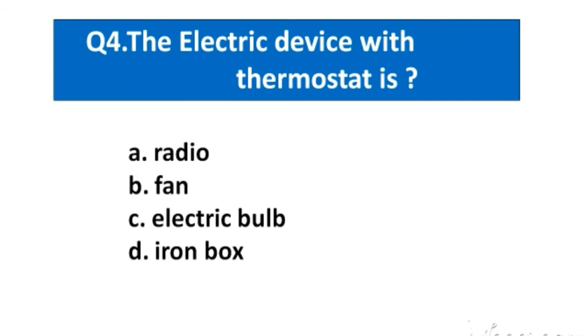Question number 4. The electric device with thermostat is. Option A. Radio, B. Fan, C. Electric Bulb, D. Iron Box.